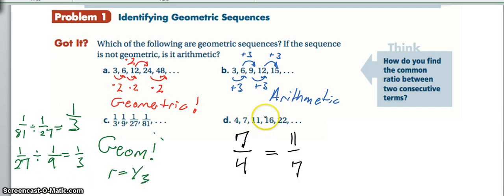So we see here in D that addition does not work. So we can take 7 fourths, this first ratio, and 11 sevenths, the second ratio, set them equal because if it is a geometric sequence, that ratio will be equal. We can cross multiply to see if their proportion is equal and it is not equal, so this is neither.